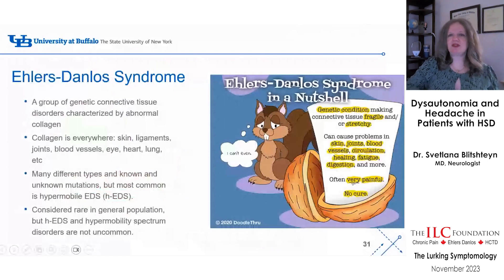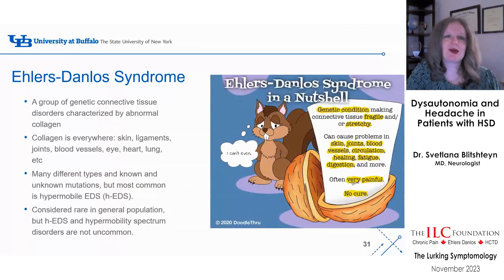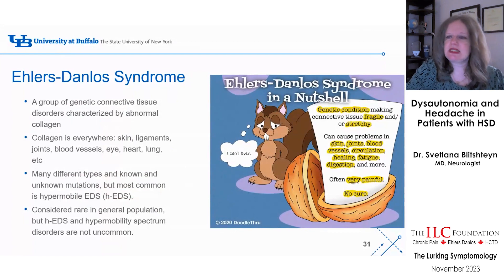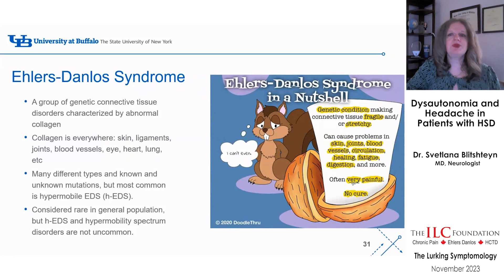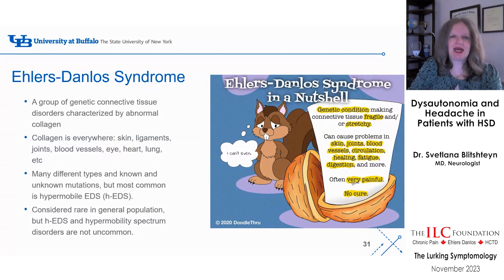EDS is a group of genetic disorders involving collagen and other connective tissues — and since collagen is everywhere, you expect multi-system complex chronic disorders. There are many different types of EDS with known and unknown mutations, but the most common is hypermobile EDS, for which we do not have genetic tests. There are clinical criteria set by the Ehlers-Danlos Society in 2017. There is no cure, and multiple problems can exist, though EDS is considered rare in the general population — hypermobile EDS and hypermobility spectrum disorders in general are not uncommon.